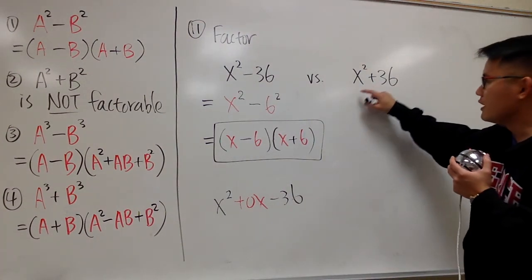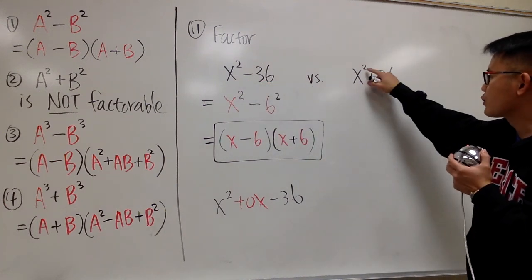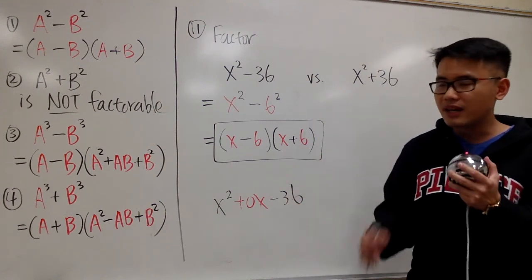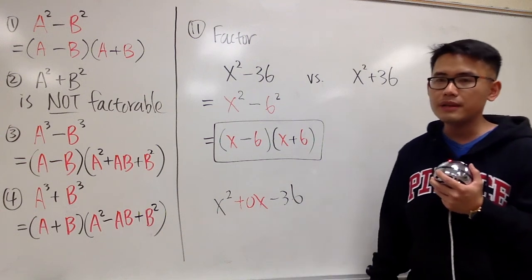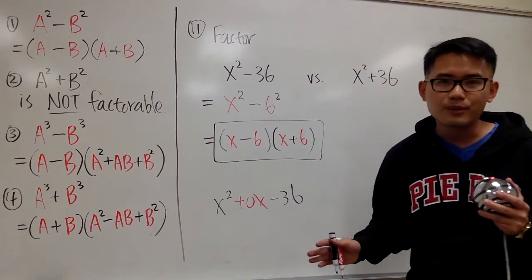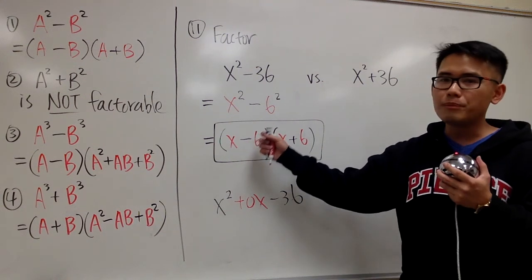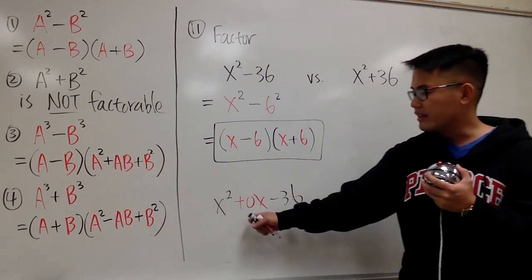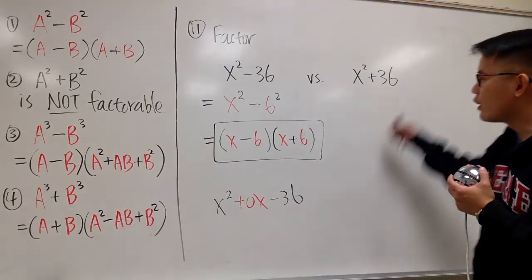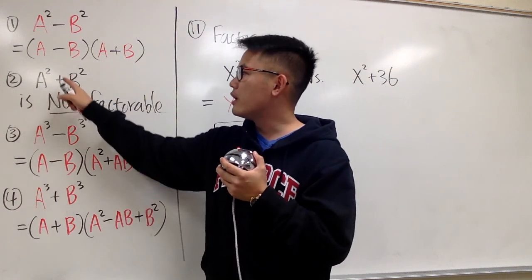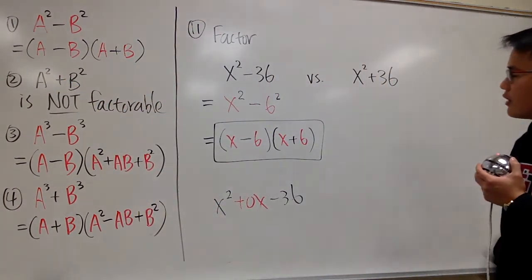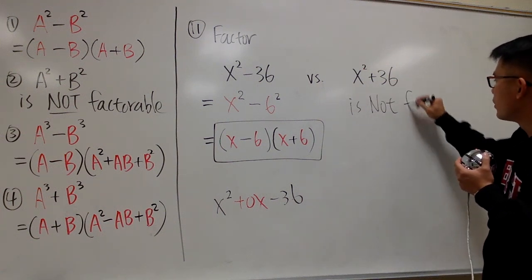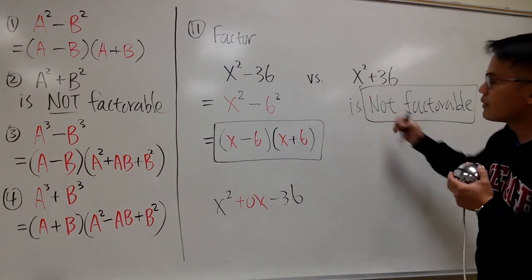Now what if instead of minus we have plus — how can we factor x² + 36? The reason the difference of squares works is that (-6)(+6) gives you a 0 in the middle term. But with x² + 36, if both signs are positive, 6 + 6 gives you 12, and if both are negative, -6 + (-6) gives you -12 — neither gives you 0. So when you have a² + b², this is not factorable. As long as you recognize x² + 36 as x² + 6², you know it is not factorable.